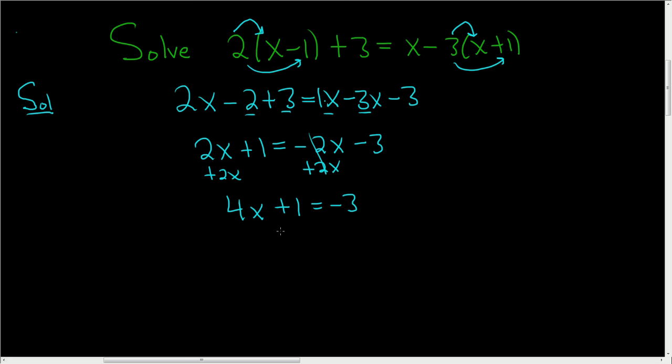Almost done, we'll subtract 1 from both sides. So 4x is equal to negative 4. And the x is being multiplied by 4, so we will divide by 4 to isolate the x. And so x is equal to negative 4 over 4, which is negative 1. And that is the final answer.